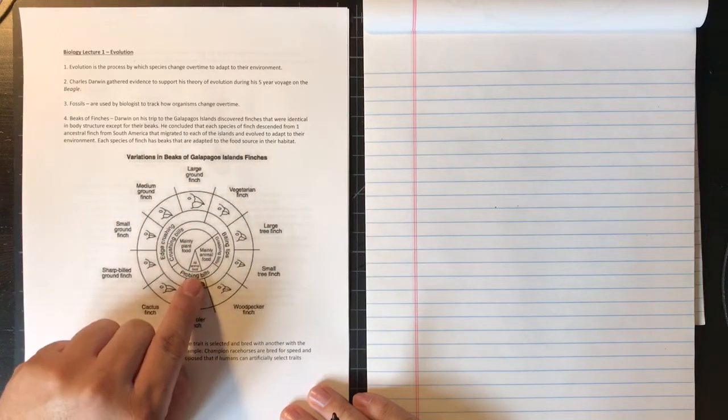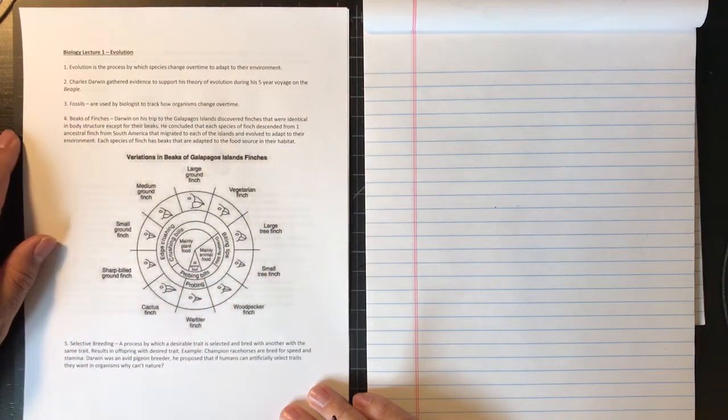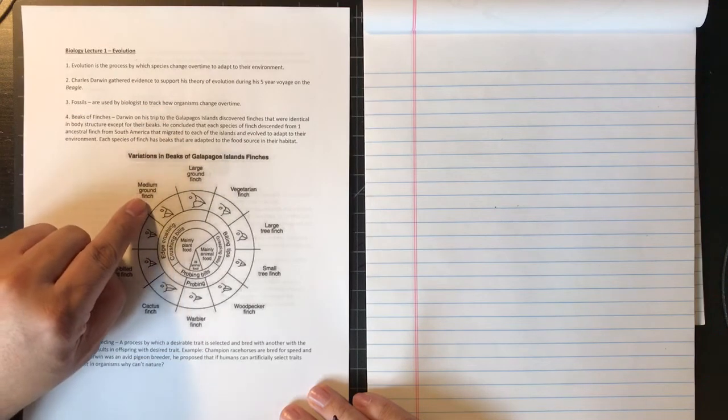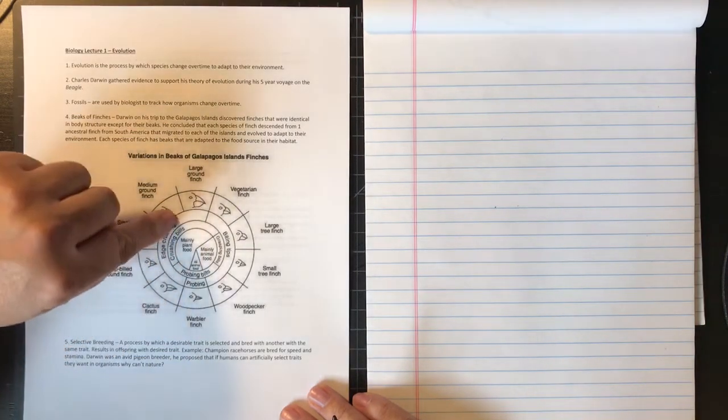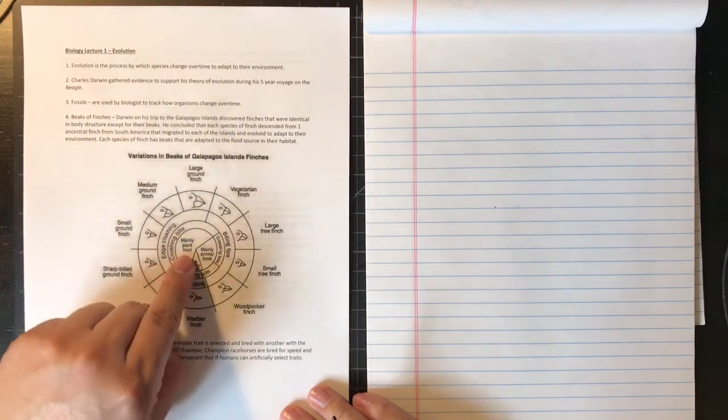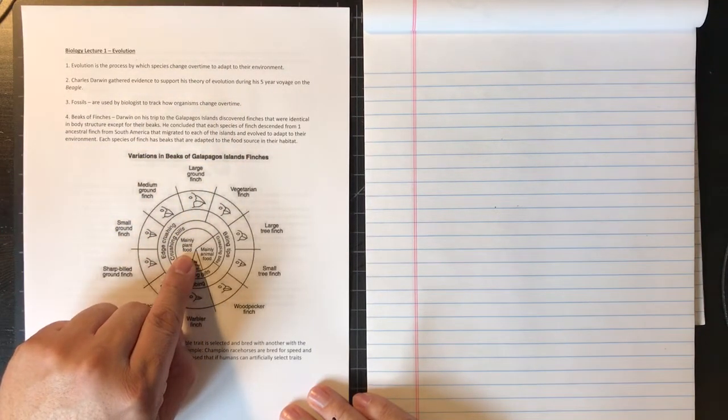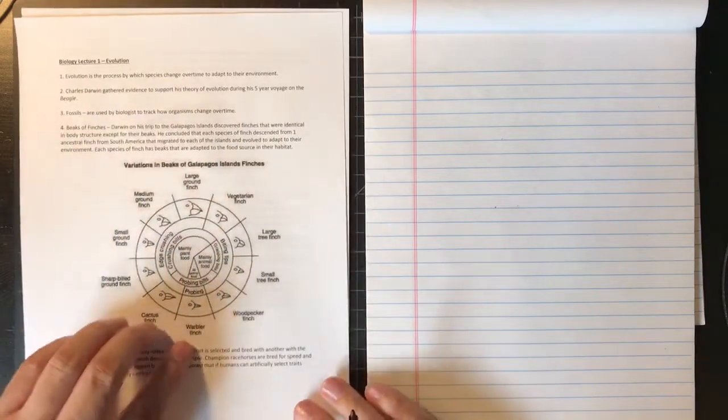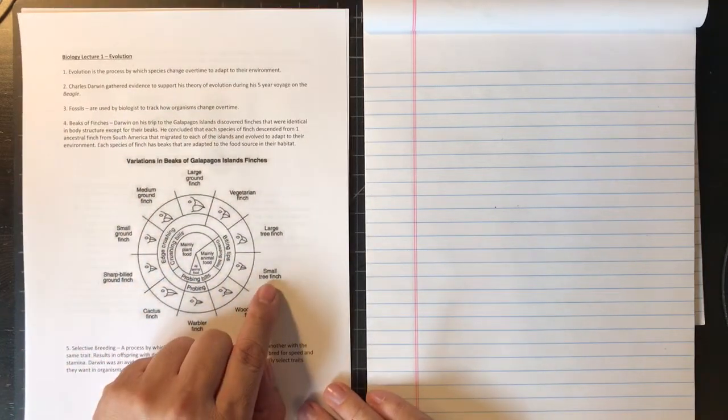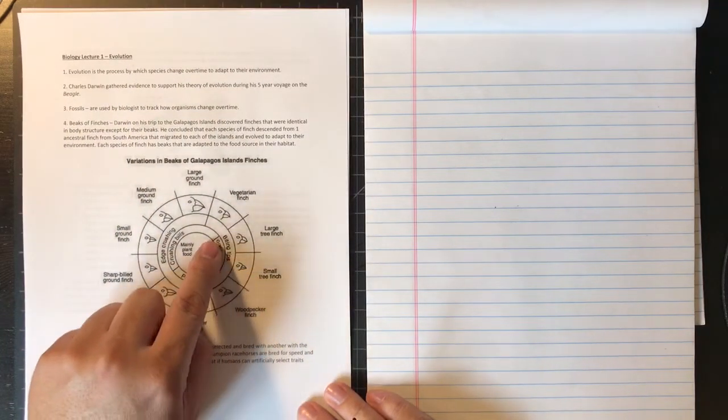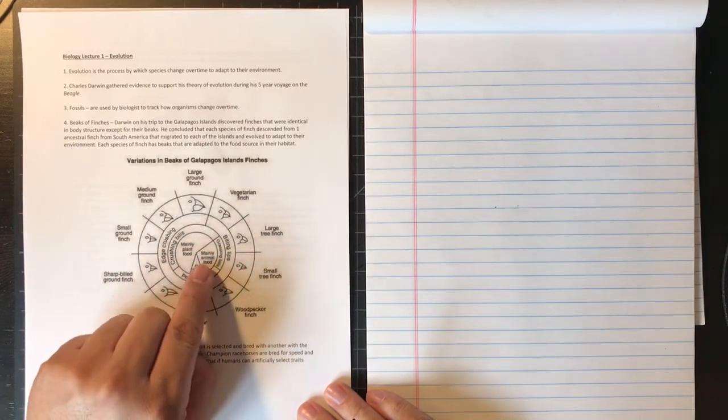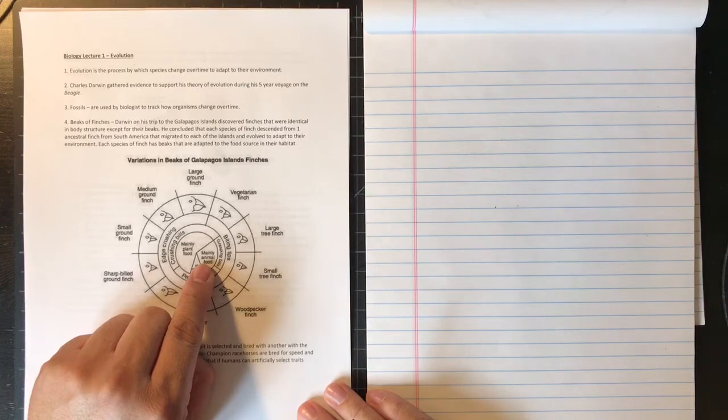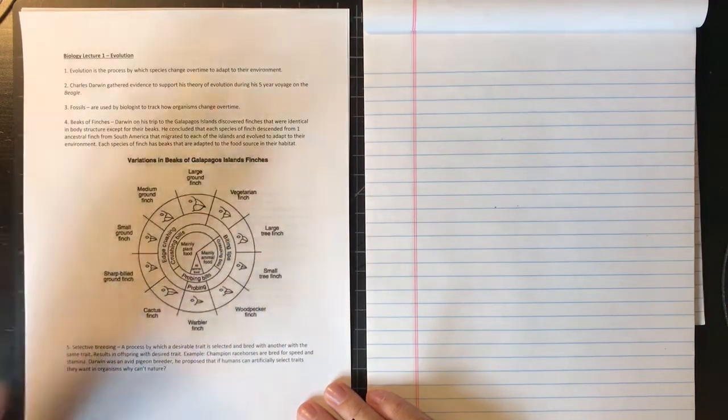How do we read this? For example, let's take a look at the medium ground finch. It has an edge crushing bill and it eats mainly plant-based food. Whereas, for example, a small tree finch has peaks for biting, grasping, and it eats mainly animal type foods, like most likely insects, maybe worms.